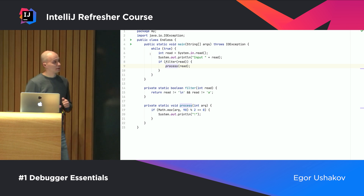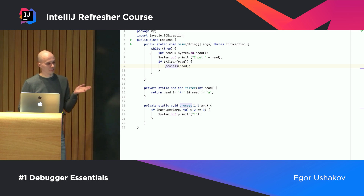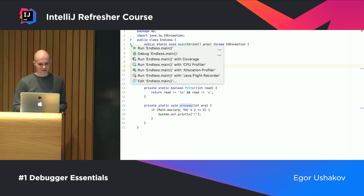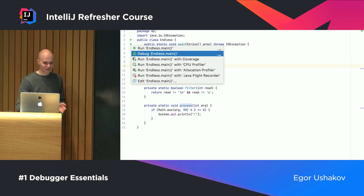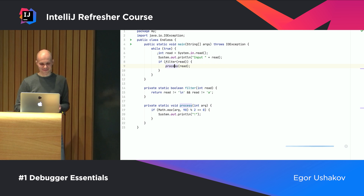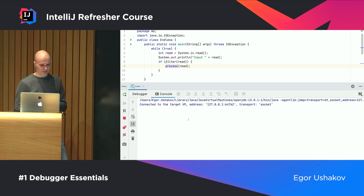How do you run the application in debug mode? Since the talk is about essentials, you just start with the debug action. You can do Run or you can Debug — for debug, you do Debug. It's easy. Now we have the application running in debug mode.